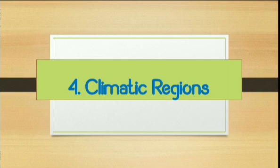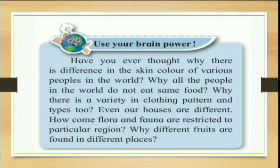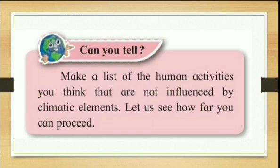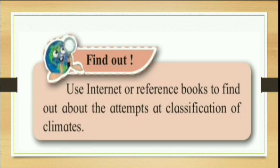That was all about Agents of Erosion. Now the next chapter is Chapter 4: Climatic Regions. In this case, the 'Use Your Brain Power' full questionnaire is eliminated. Then 'Can You Tell? Make a list of human activities and how they are influenced by climatic elements' — this part is eliminated. Next, 'Find Out: How you can use the internet and reference books to find the classification of elements' — this extra activity is also eliminated.